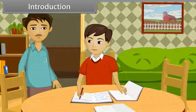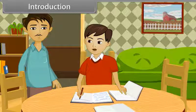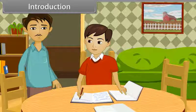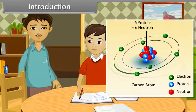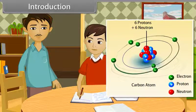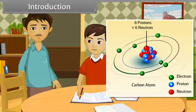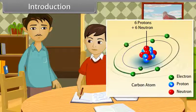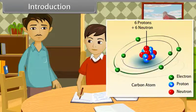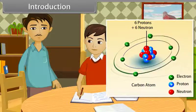Atoms join together to form a molecule. What kind of materials are there in atoms? Atoms consist of electrons, protons, and neutrons, and a central core which is called the nucleus. In this lesson, you will study the structure of the atom.